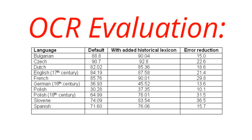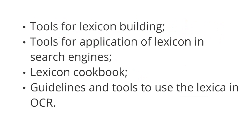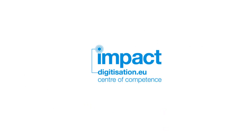So what benefits does language processing bring to your digital resources? More detailed analysis of IMPACT outputs will be made available shortly. But in this early snapshot of the OCR evaluation work, of course taking into account a number of processing caveats, we see between a 10.1% and 36.5% error reduction dependent on language. A higher rate of improvement is feasible if pipelined with other IMPACT resources. There is a range of guidance, a number of language tools, and further documentation available through the IMPACT Central Competence website. See www.digitisation.eu for further details and support. Thank you.